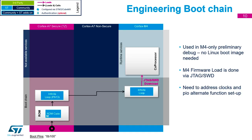So that you can develop the Cortex-M4 without Linux present, there is a dedicated mode called the engineering boot chain. It's controlled by the boot pins being set to 100, shown in the bottom left corner. This launches the ROM code and puts the dual-A7s into an infinite loop, giving you the ability to use JTAG or SWD to download firmware into the device RAM.